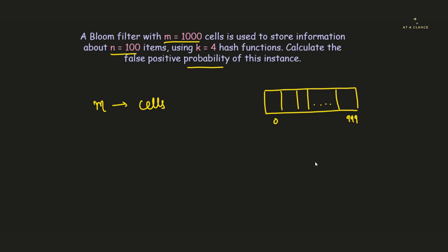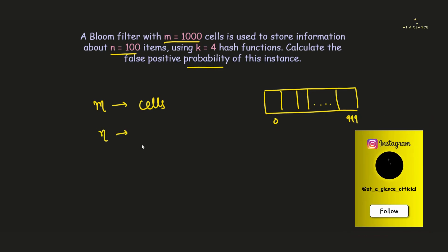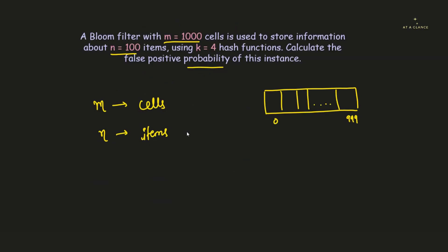And now the next parameter is n. Here n means the total number of items that are actually going to be fed into the Bloom filter. So n is the total number of items, which is given as 100. The total number of cells in the Bloom filter is 1000, and we are also given k = 4 hash functions.